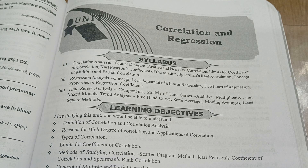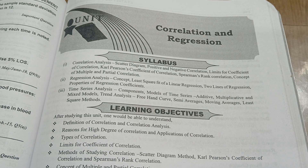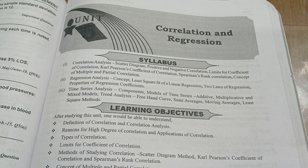Before starting, I want to give you clarity that in this chapter there is only about a 1% chance of getting a theory question. Because definitely there will be a problematic question from this unit. But anyway I am explaining the theory also, which will be helpful for you all. But don't depend on theory from this unit. Unit number 5 covers correlation and regression, and that is a problematic method.